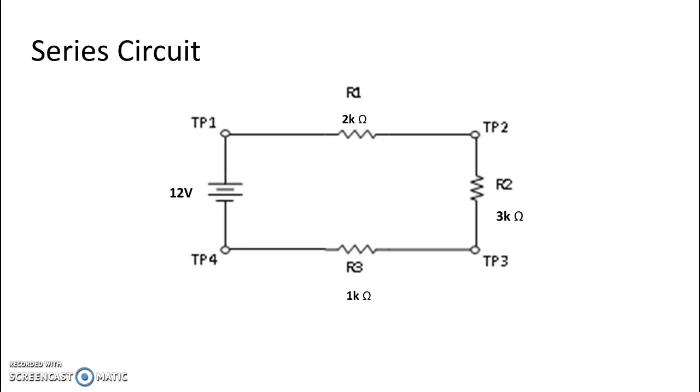This simple series circuit contains a conductor, three resistors of varying values, and a 12 volt DC power supply.